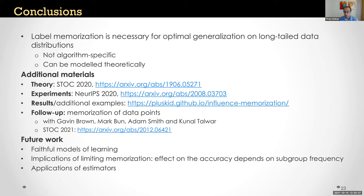For future work: first, understanding implications for settings where memorization is restricted — such as differentially private learning which limits memorization, or model compression which limits model capacity. It has been observed empirically that limiting memorization has different effects on subgroups of different frequencies, and our model explains why, but we still need to understand how to best address these effects. Second, the memorization and influence estimators we provide will have other applications — there are already some works building on them, but there's still a lot to explore.